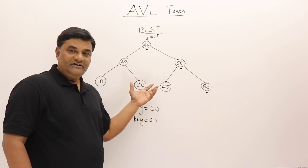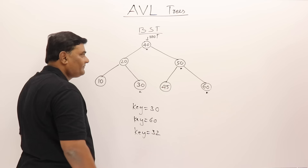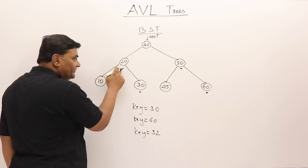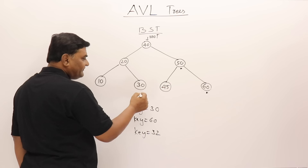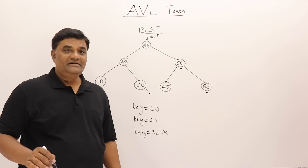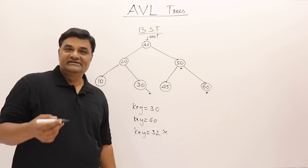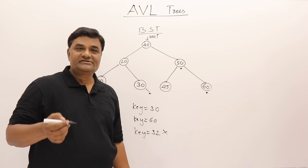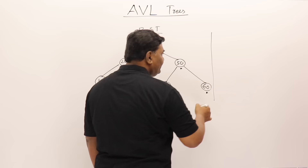Let us search for key element 32. Starting from root: 32 is less than root, go left; 32 is greater, go right; 32 is greater, try right but nothing is there — search fails. Whether successful or unsuccessful, the maximum number of comparisons depends on the height of the tree.